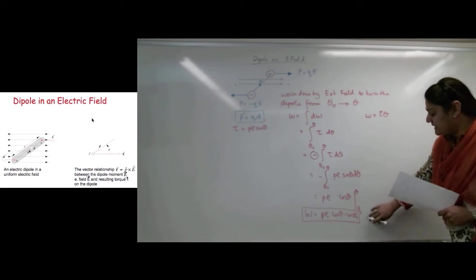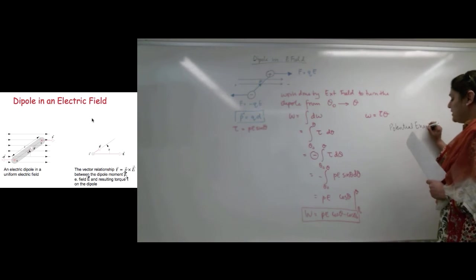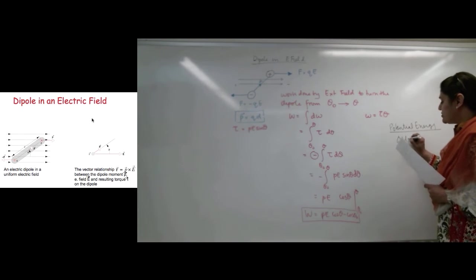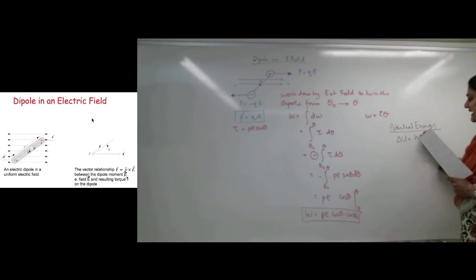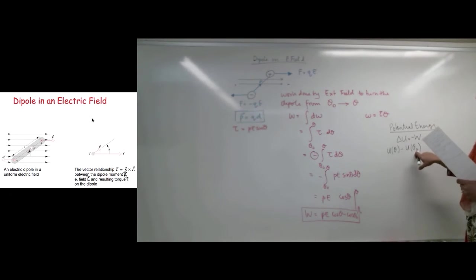Now, another thing that's really, really interesting that leads from here is potential energy. We know that potential energy, the change in potential energy, is the same as the negative work done. So, this means that the potential energy change to move this dipole from some initial angle theta 0 to some final angle theta, is equals to the negative work done, or equals to PE cosine theta 0 minus cosine theta. I should put a bracket here, because it'd be multiplied with both of them. So, this is going to be PE cosine of theta 0 to cosine of theta.